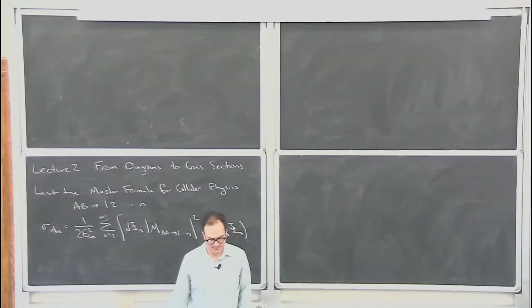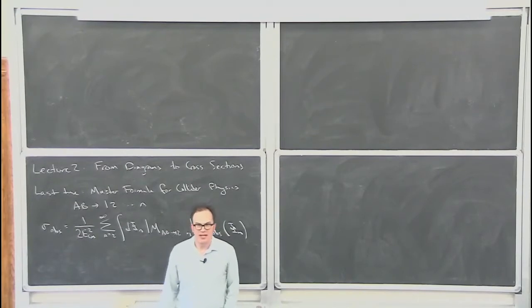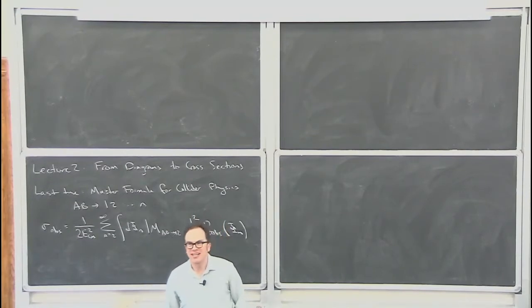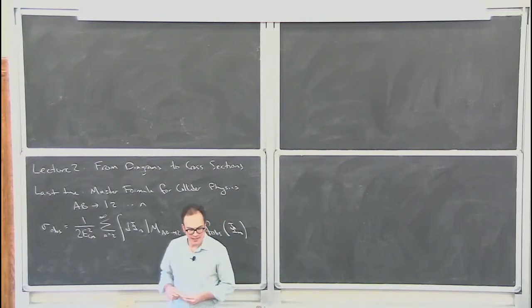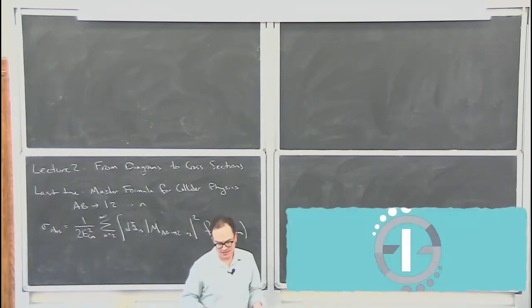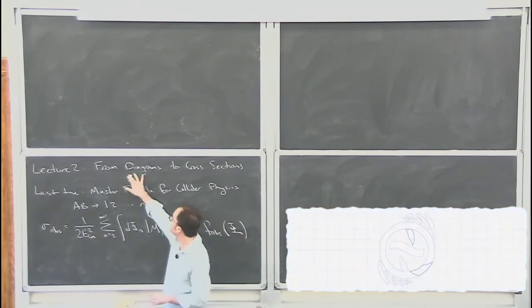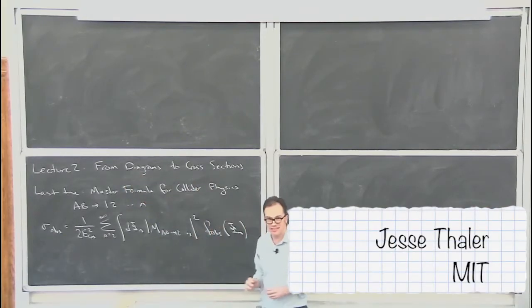Second lecture by Jesse Keller. Good morning, everyone. We're going to continue our discussion of QCD and collider physics. In this lecture, I want to start bringing ourselves from Feynman diagrams to cross-sections of interest.